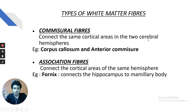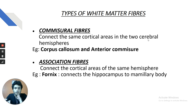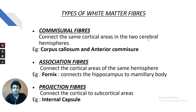The fornix is primarily an association fiber. For AIIMS single-answer questions: fornix contains association fibers. For PGI multiple-correct questions: fornix may contain all three fiber types. The internal capsule classically represents projection fibers. Summary: commissural fibers connect two hemispheres; association fibers connect areas within the same hemisphere; projection fibers connect cortex to subcortex.